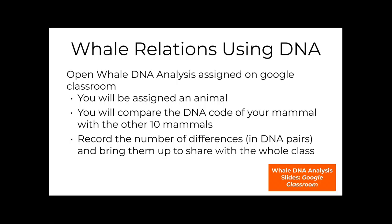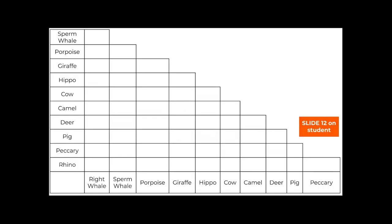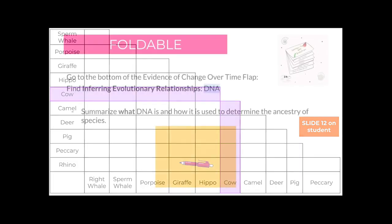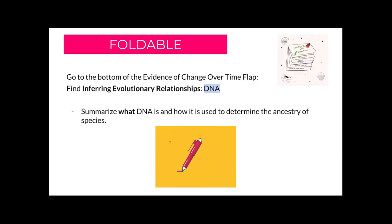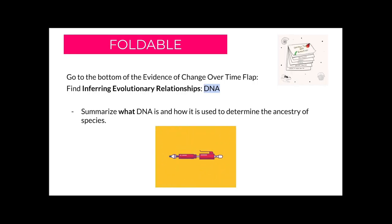You're going to pick an animal and compare that animal's DNA code to the other mammals. If you get a cow, notice that the cow horizontally represents the animals listed below, and then at one point you go to the vertical column to get the other animals. Go to your foldable and summarize on the bottom flap of evidence of change over time how to use DNA as evidence for ancestry of a species. Let's do it.